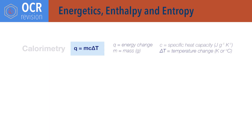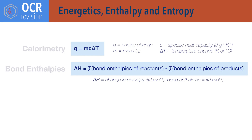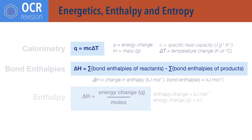Temperature change can be in either degrees Celsius or kelvin, as a change in one degree Celsius is the same as a change in one kelvin. Delta H change in enthalpy equals sum of bond enthalpies of reactants minus sum of bond enthalpies of products — sum means added all together. Delta H enthalpy change equals energy change Q divided by moles.